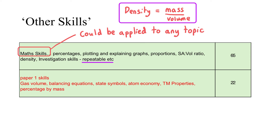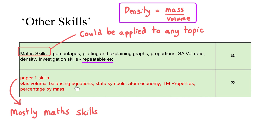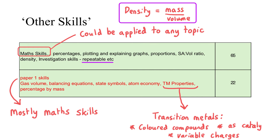Across those six papers, 22 marks have appeared that are directly related to Paper 1 skills. These include gas volumes appearing once; balancing equations coming up three times, worth a total of two marks per paper on those occasions; state symbols appearing a few times; atom economy more than once; percentage by mass also; and transition metal properties, which has come up three times for a one-marker each time — requiring you to recall that transition metals can act as catalysts or form coloured compounds.